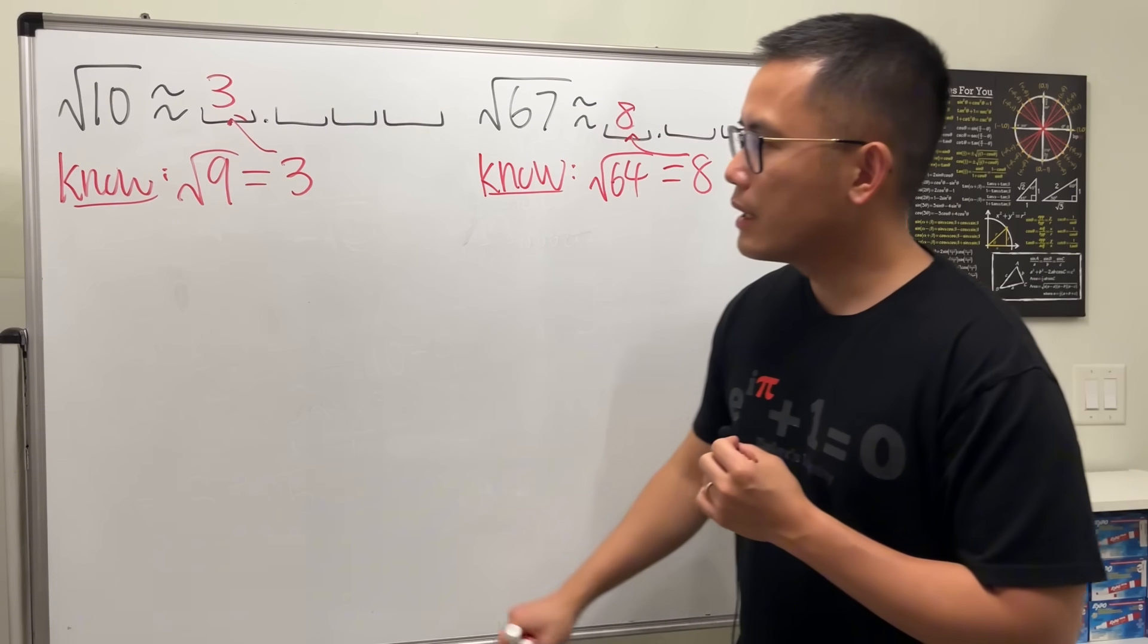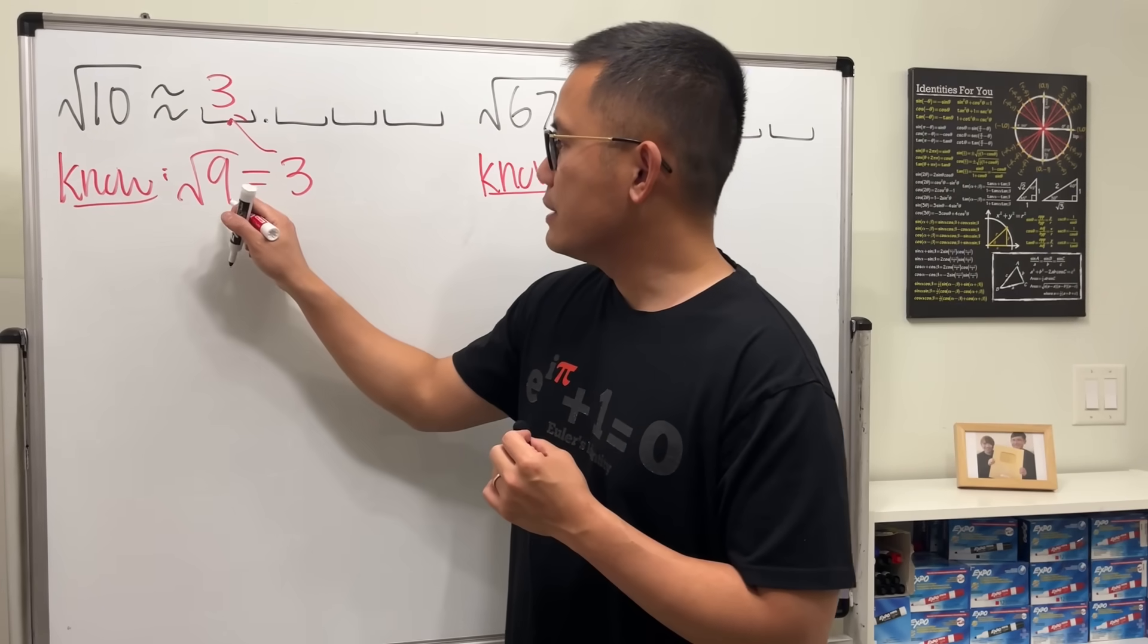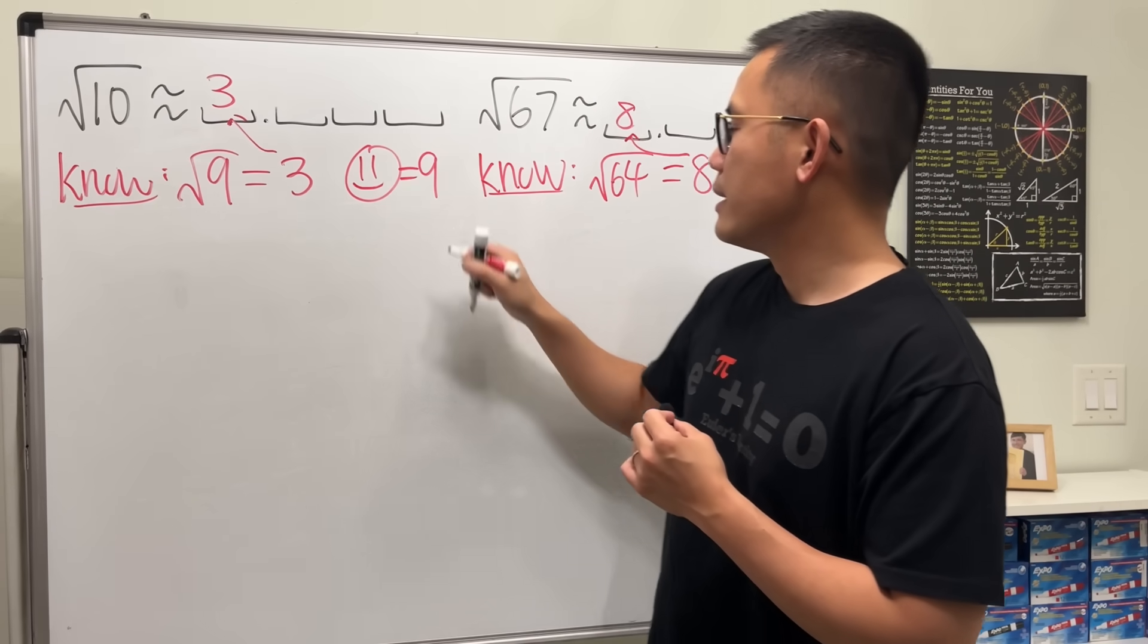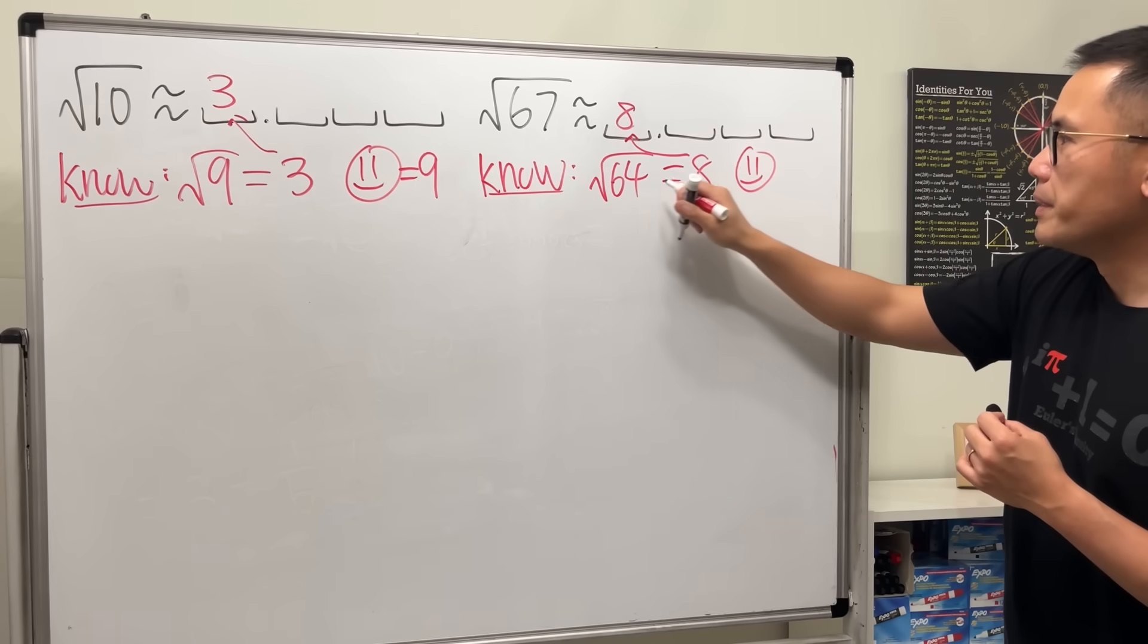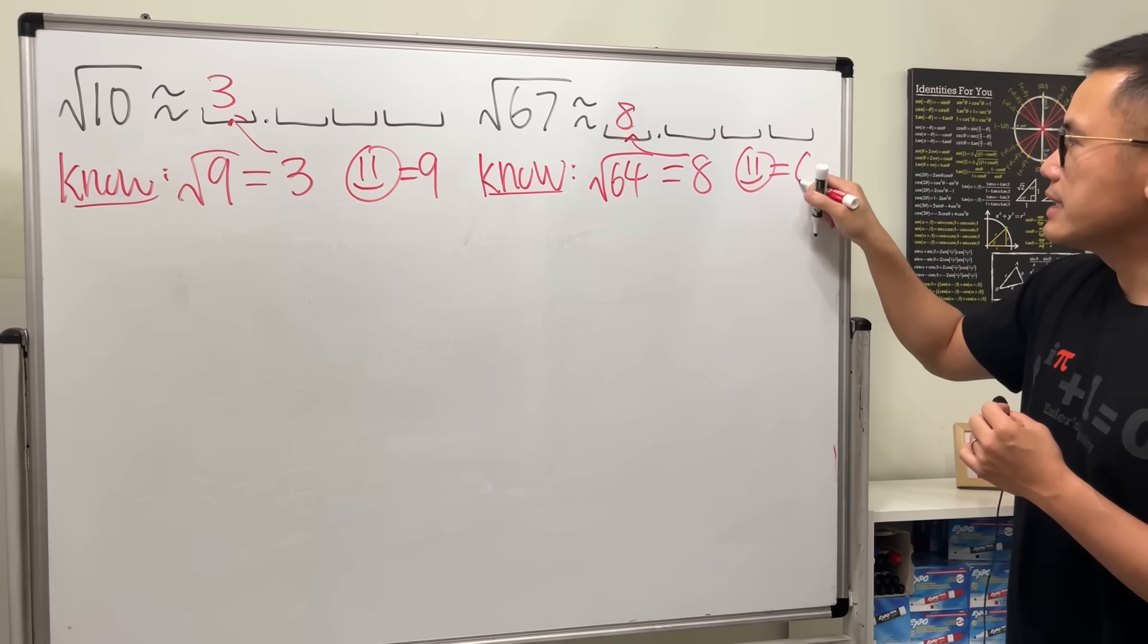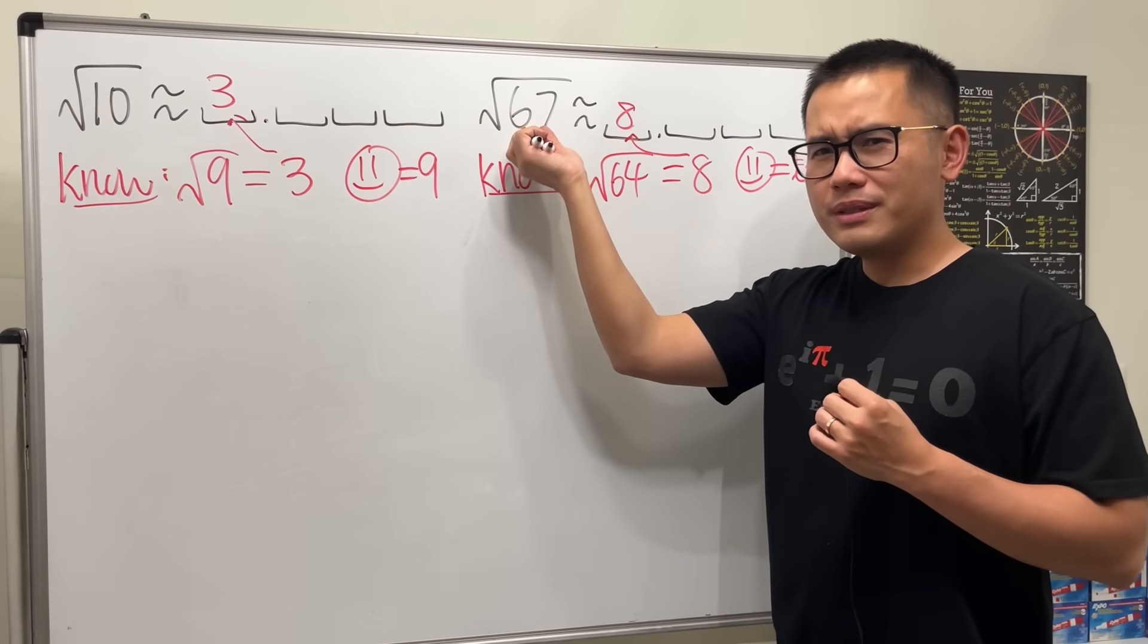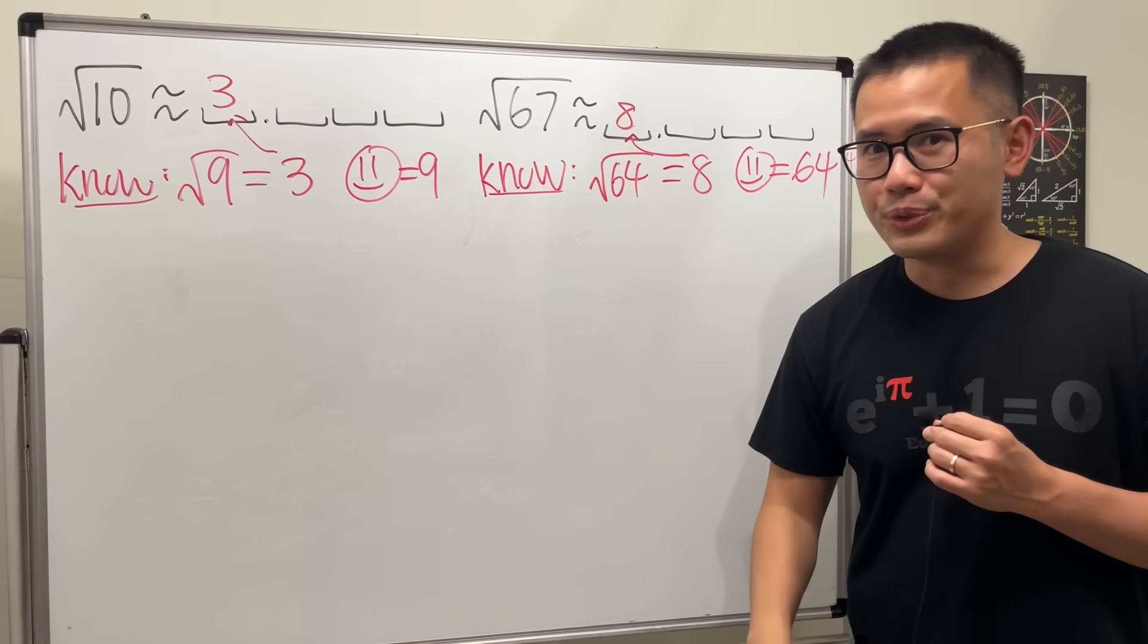Now, we are going to figure out three decimal approximations for these two numbers. This is how. Here, I call this 9, the happy face. Here, in this case, the happy face will be 64, because they are the perfect squares that are a little bit smaller than the input. And that's crucial.